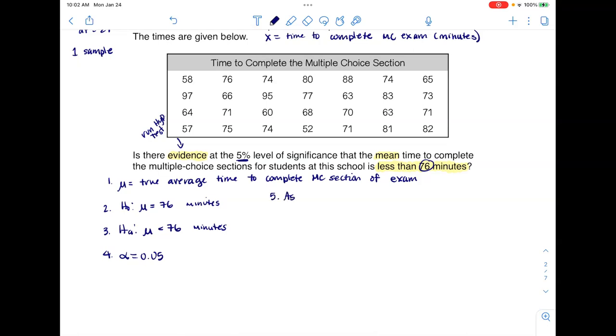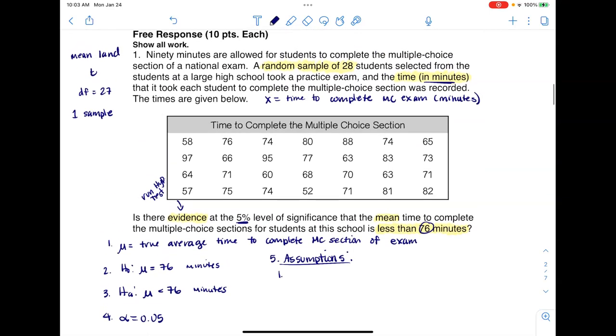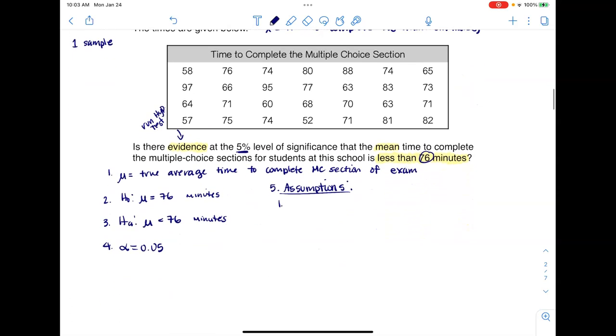All right. So, the first assumption we have, regardless of if you're in mean land or proportion land, is did I have a random sample? Or does it say somewhere in the problem that my sample represents my population? Because that's ultimately what we want. We want our sample to look like our population just on a smaller scale. So, if I scroll back up here, I do remember the phrase random. So, I'm going to head over here and write random sample. And I'm going to put a little check mark. That just communicates, hey, I did check that. The next thing I need to do is get normality. Now, in mean land, there are three ways. I'm going to write them over on the side here. So, I could have that normality was stated. That's one of the easier ways to do it. Right? I could have that my sample size is 30 or more. Or I could make a graph.